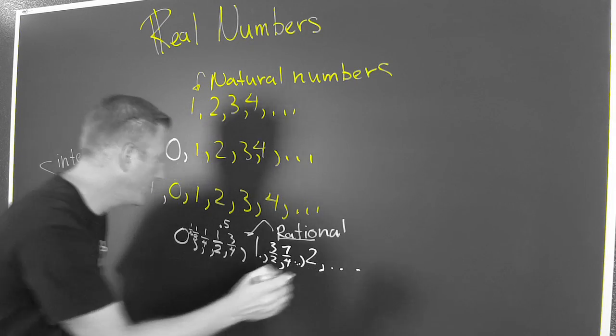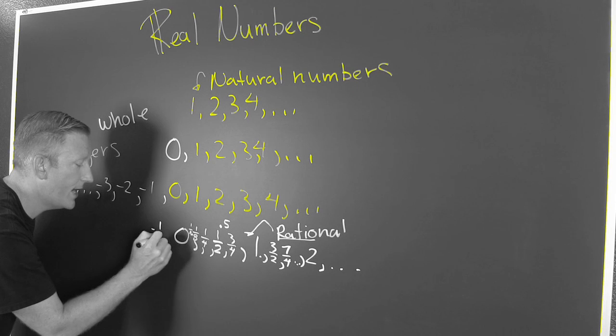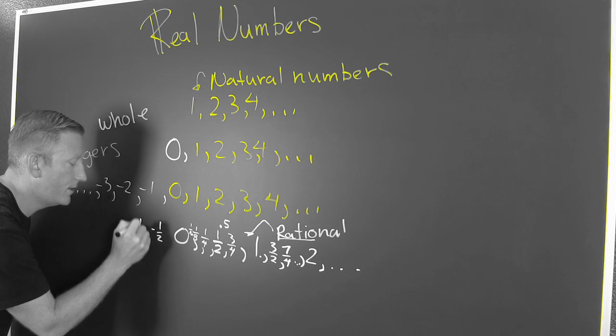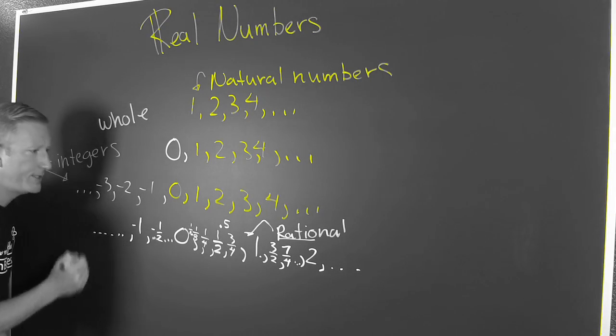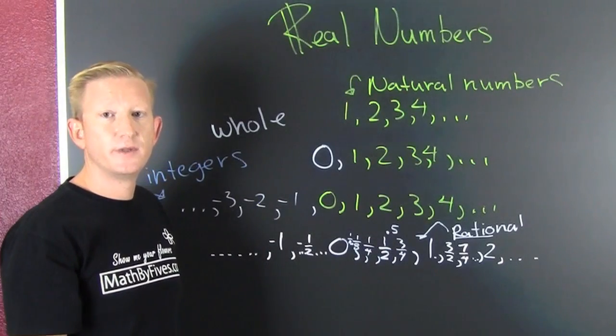And then there's negative fractions in there too, like minus one half, that's in here. And then there's an infinite number of numbers in there, and then it keeps on going in there. There's a lot of numbers in the rational numbers.